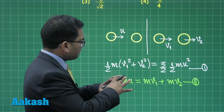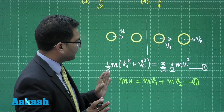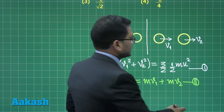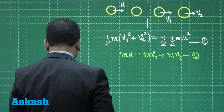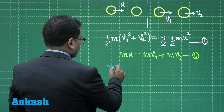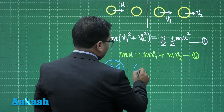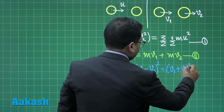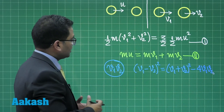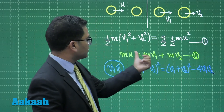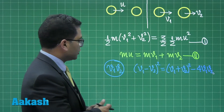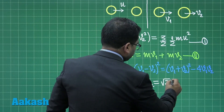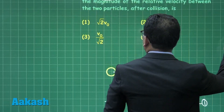To find v1 minus v2, we use the identity: (v1 − v2)² = (v1 + v2)² − 4v1v2. We know v1² + v2² from equation 1, and v1 + v2 from equation 2, allowing us to calculate v1v2. Substituting all values gives v1 minus v2.